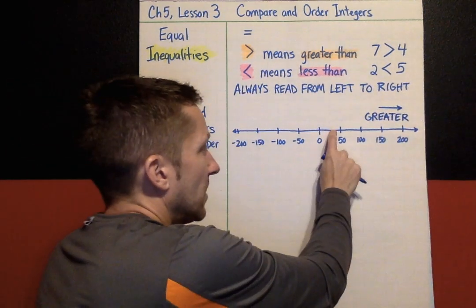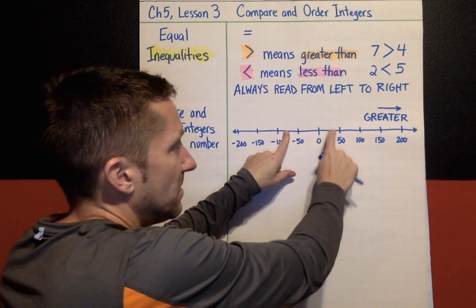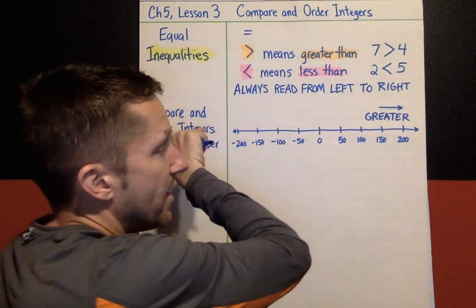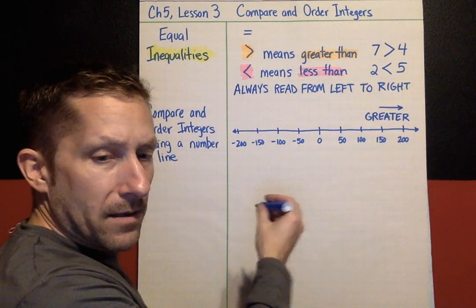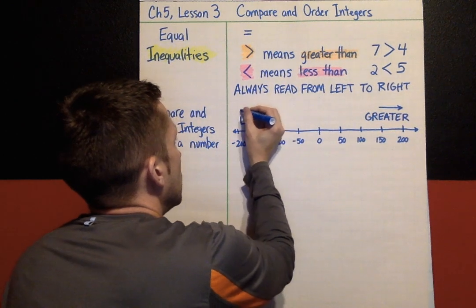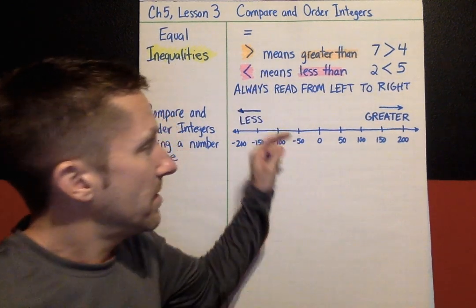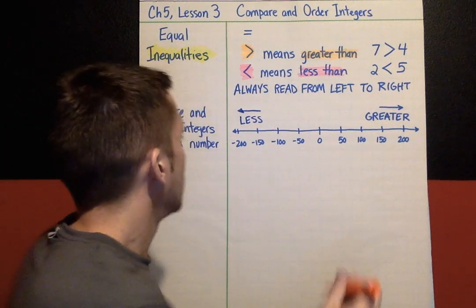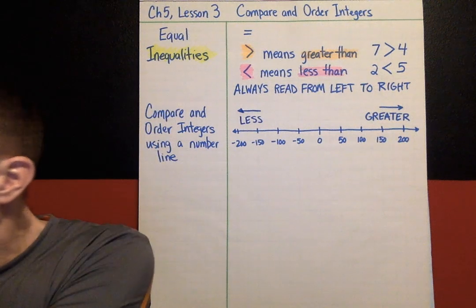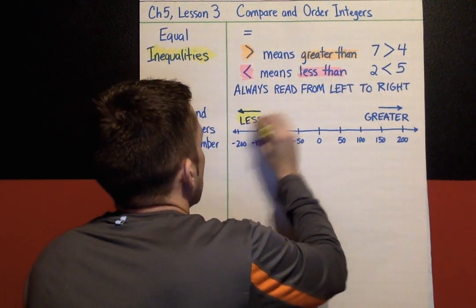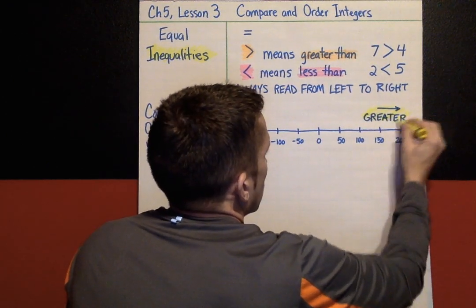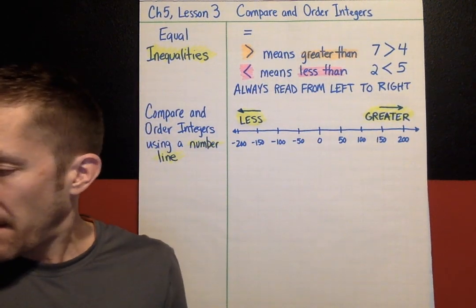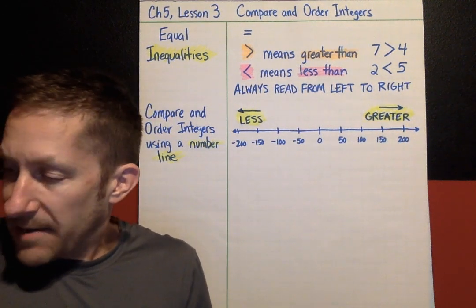If something is to the right compared to something else, it is greater — it's more in that direction. If something is further right, it's greater. So that means going left is the less direction. Greater to the right, less to the left. We use a number line for our comparing strategy.